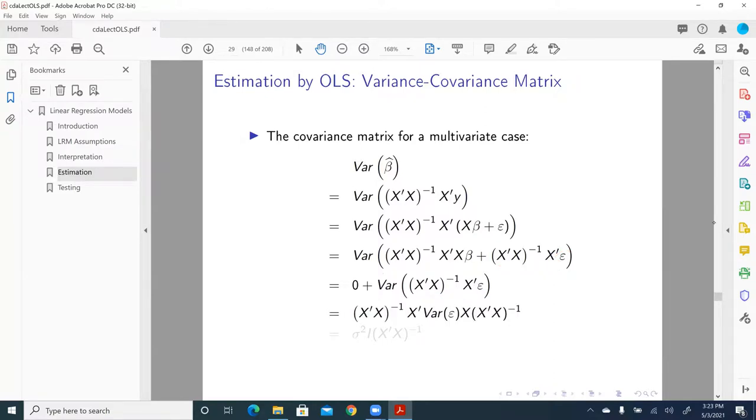Since X prime X inverse X prime is viewed as fixed, then we're going to take advantage of another property of calculating variance. So the only variable is epsilon.